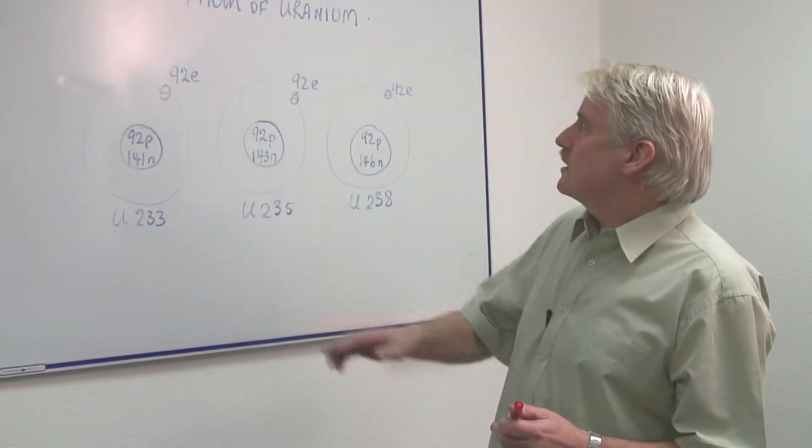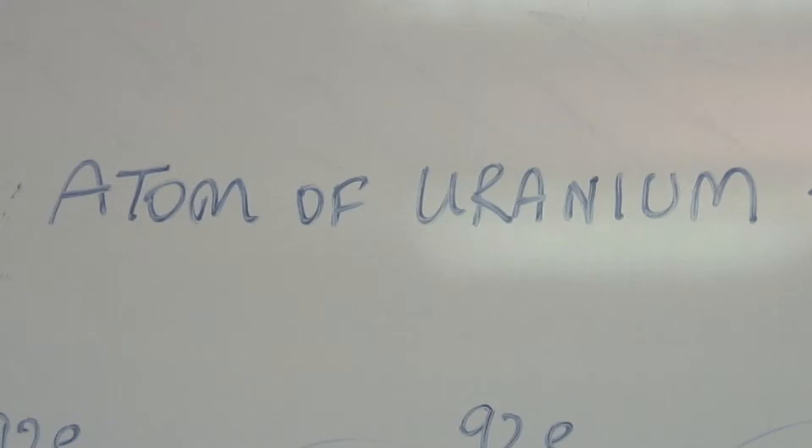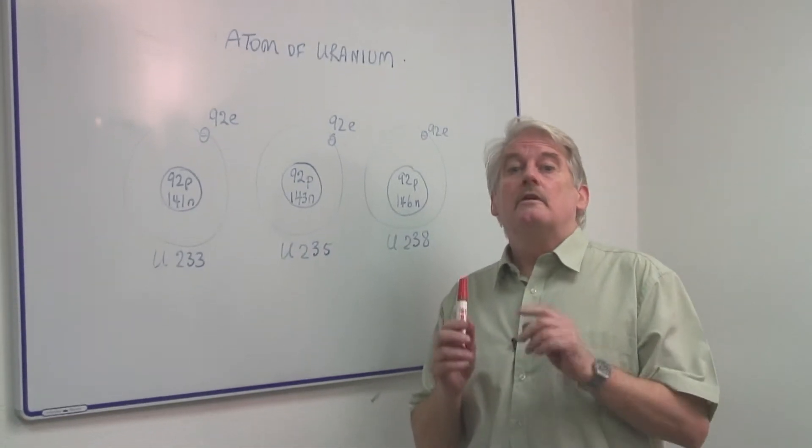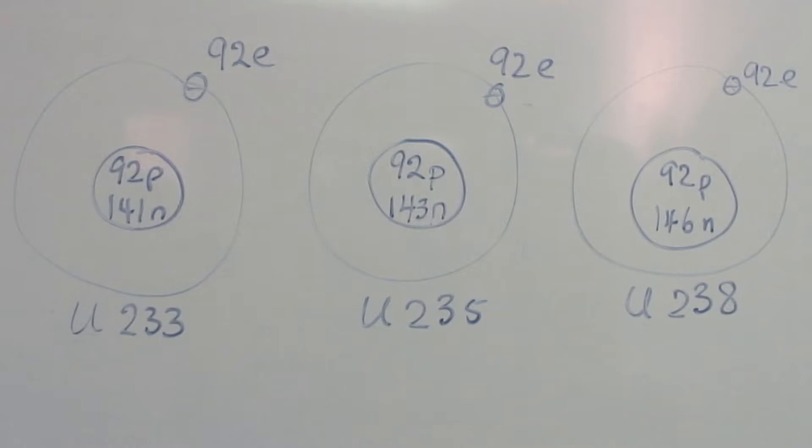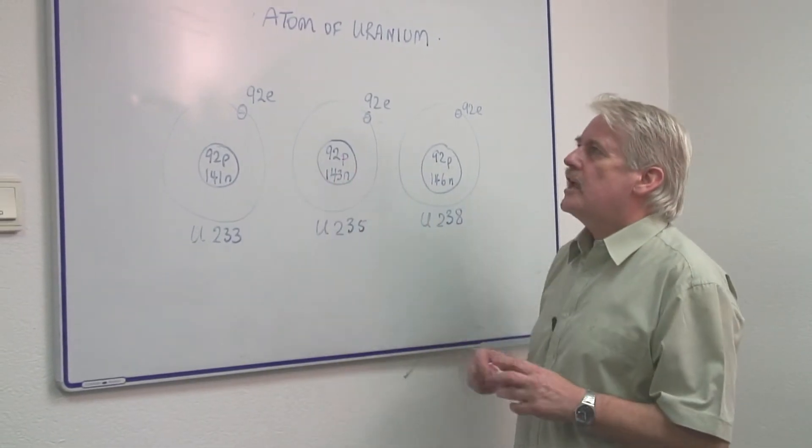Hi, I'm Steve Jones and I'm going to tell you about the structure of an atom of uranium. Well, I'm going to tell you not just about one atom of uranium but about three different types of atom of uranium, the three isotopes.